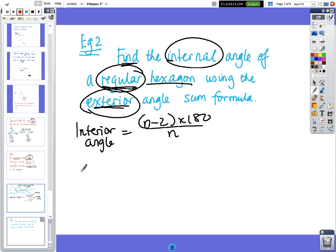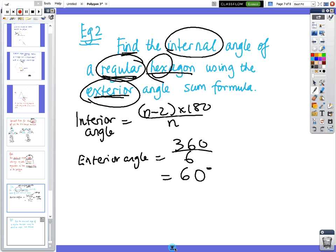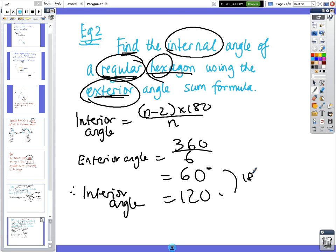So, what we do is, the exterior angle is always 360 divided by the number of sides. So we've got a hexagon, so we divide by 6, so we get 60 degrees. So therefore, the interior angle must be 120 because those two numbers have to add to 180.